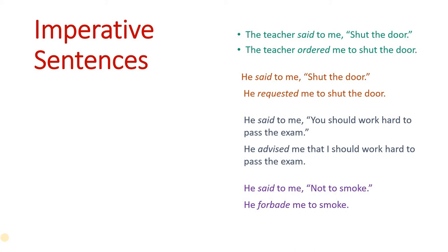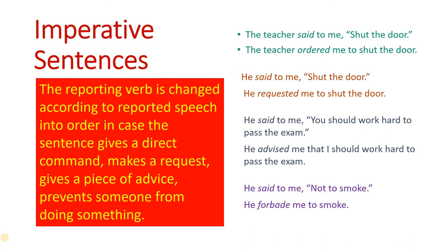These are statements where the reporting verb is put in a different word and not as 'said' or 'told.' The first one: the teacher ordered. The second one: shut the door, but it is requested — he requested. The third one: there is advice — he advised. It could be 'he said' but it is better when we write 'he advised.' The fourth one: he said to me not to smoke, so you are trying to forbid somebody from doing something wrong, and therefore the word 'forbid' is used. The reporting verb changes according to the reported speech.